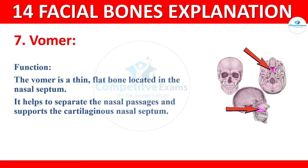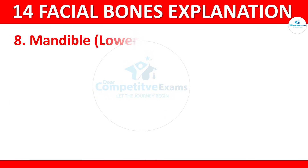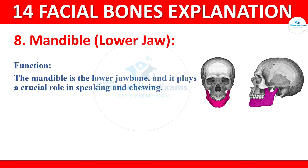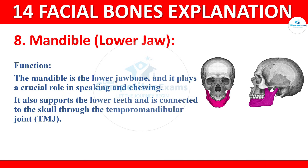The next type of bone is mandible, also known as the lower jaw bone. The mandible plays a crucial role in speaking and chewing. It supports the lower teeth and is connected to the skull through the temporomandibular joint (TMJ).